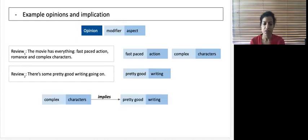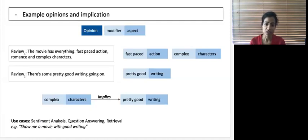The relationship between opinions is implication. For instance, complex characters could imply pretty good writing. Note that this relationship may not always be expressed explicitly in the same review. Such implication relationships have many applications in question answering and retrieval. For example, it could be used to answer a question show me a movie with good writing, using just the first review which only talks about complex characters in the movie.